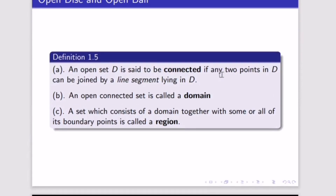An open set D is said to be connected if any two points in D can be joined by a line segment lying in D. An open connected set is called a domain. A set which consists of a domain together with some or all of its boundary is called a region.